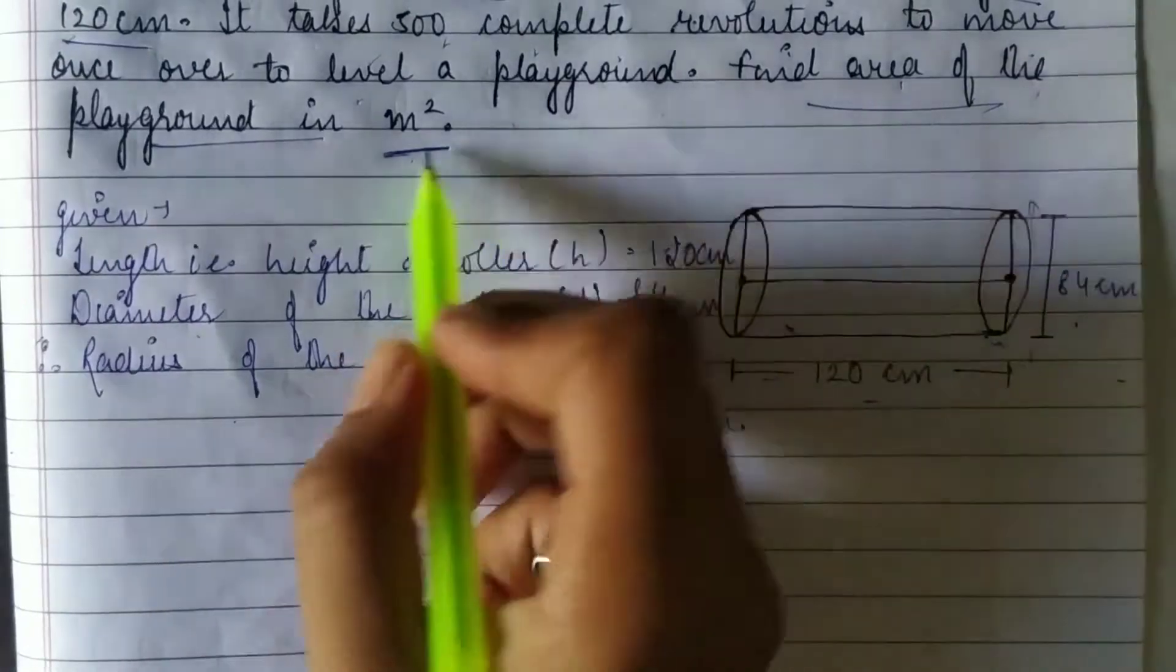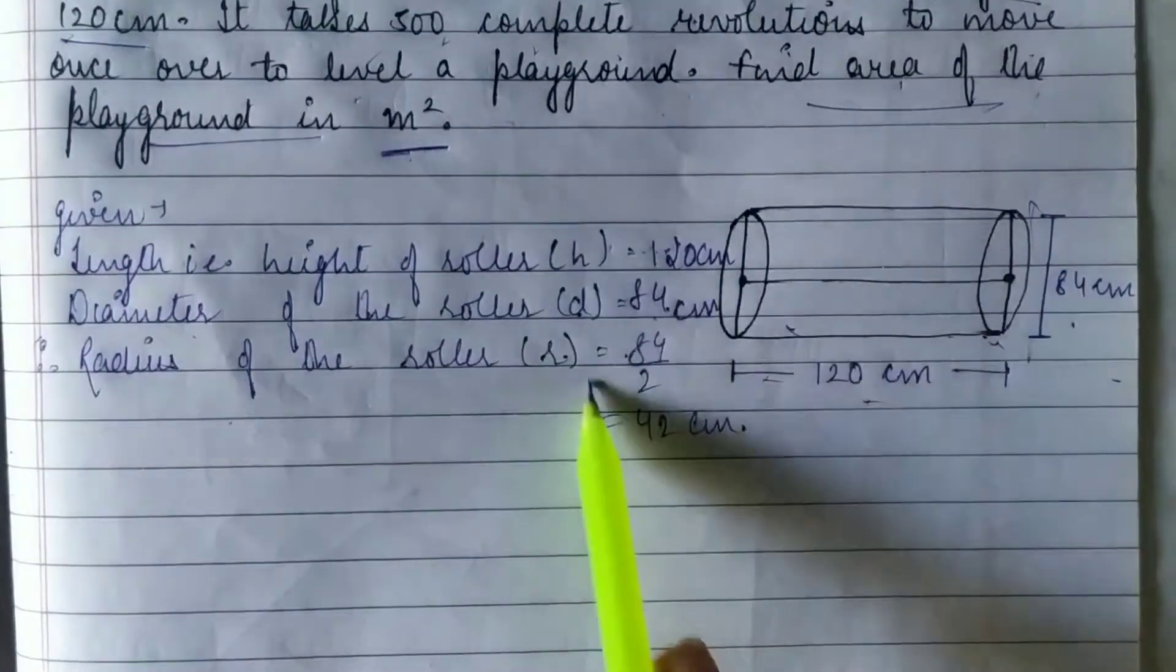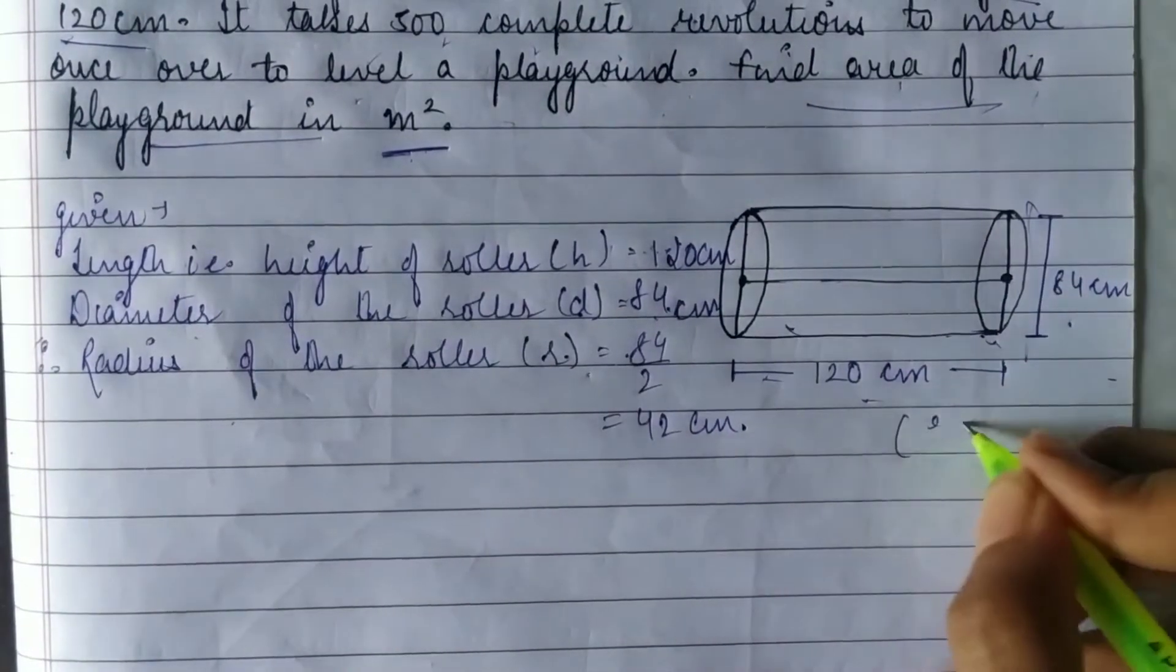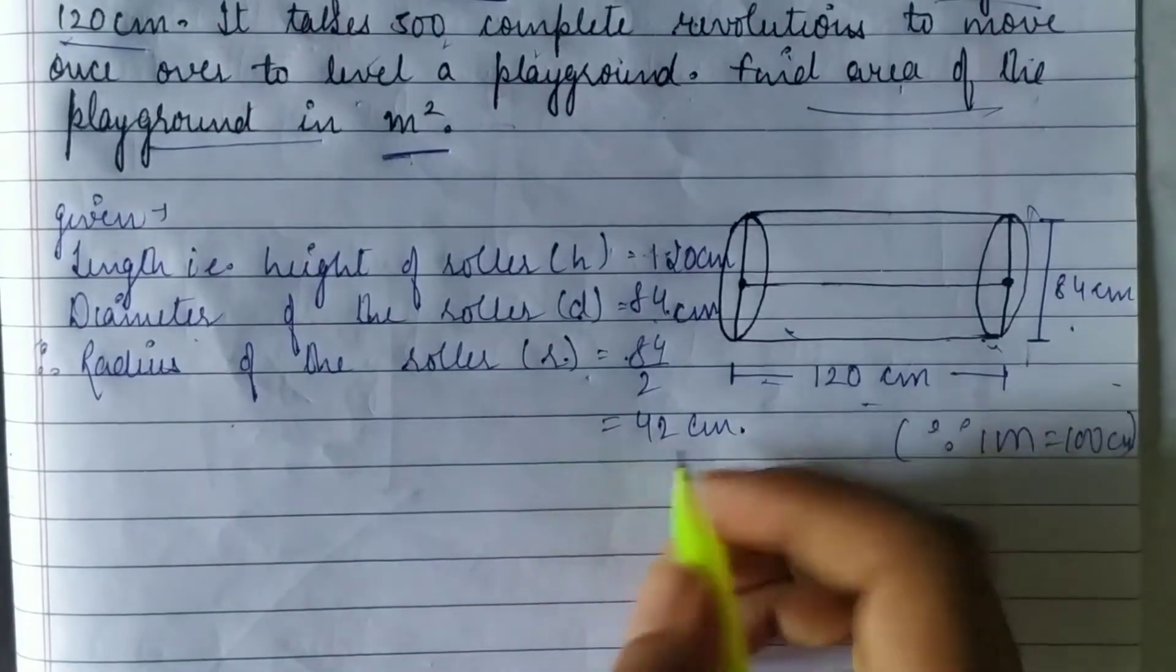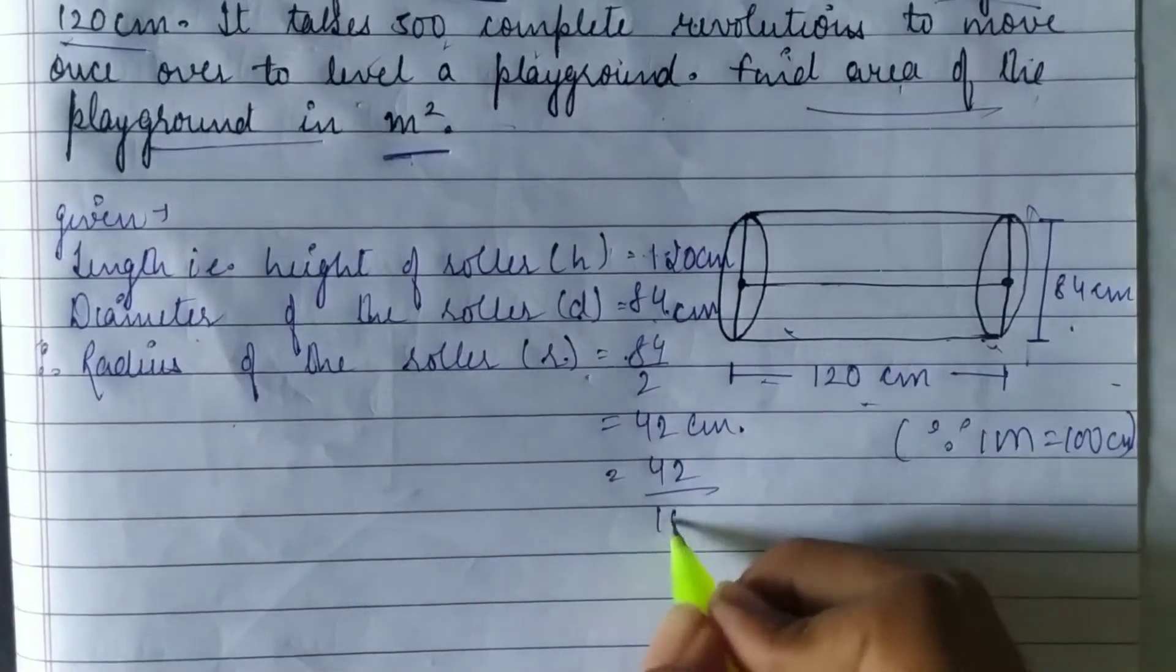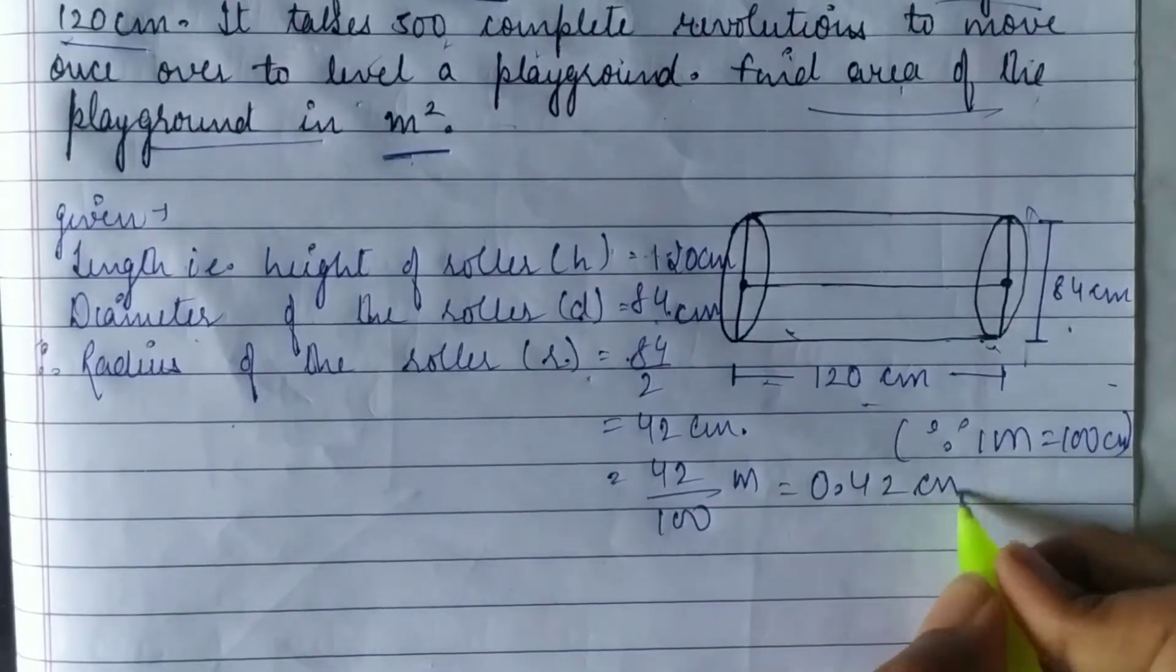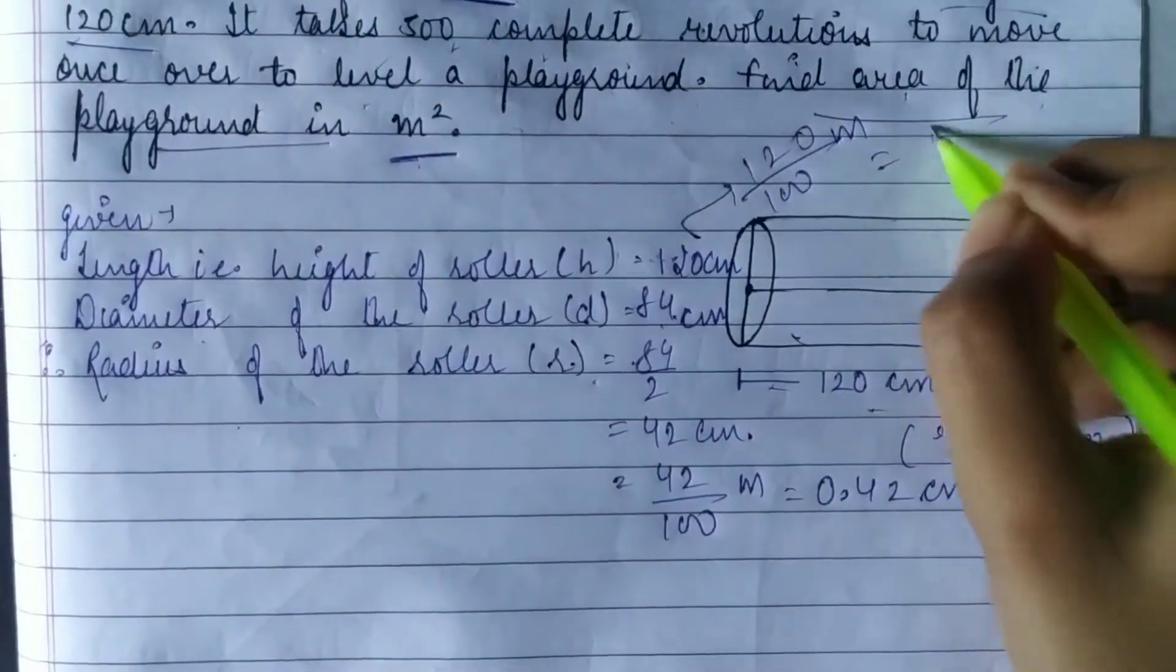We want the answer in meter square. For this, we have two options: either convert length and radius to meters first, or convert the final answer. Since 1 meter equals 100 cm, 42 cm divided by 100 gives 0.42 meters, and 120 cm divided by 100 gives 1.2 meters.